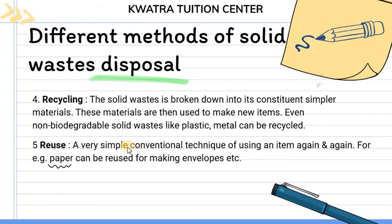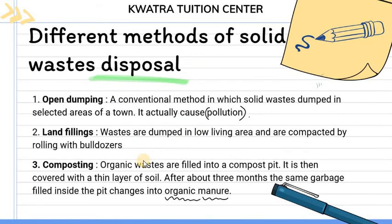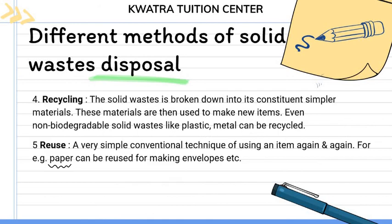So we have five methods here. First is open dumping. Second is land fillings. Third is composting. Fourth is recycling. And fifth is reuse. These are the five methods for solid waste disposal.